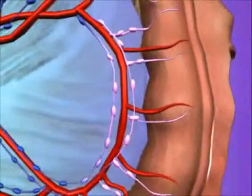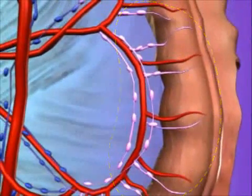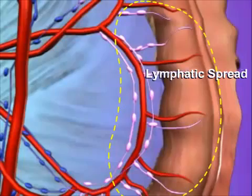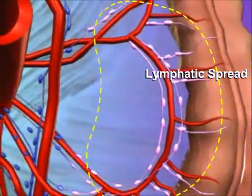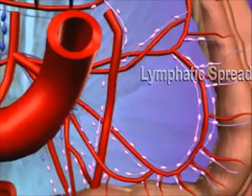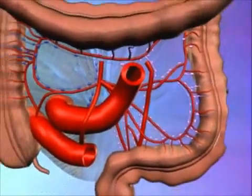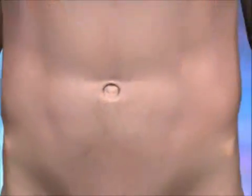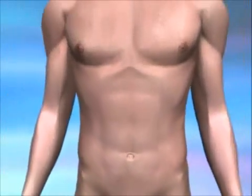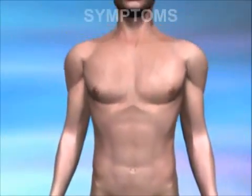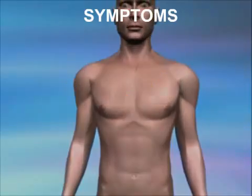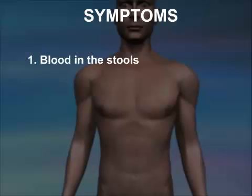A cancerous polyp grows rapidly in size, eventually breaking through the wall of the colon and spreading through the tiny channels called lymph vessels. The cancer can also spread through blood vessels to other parts of the body.